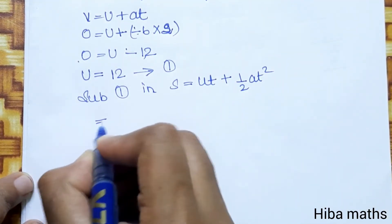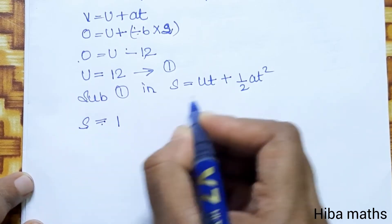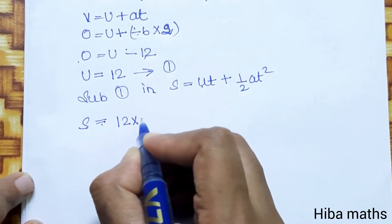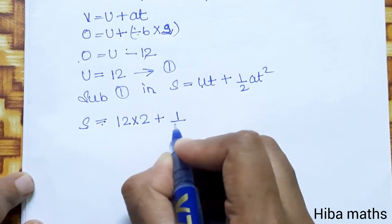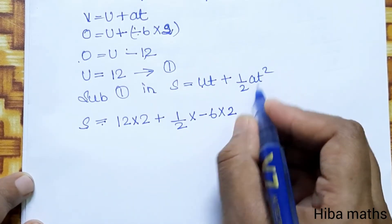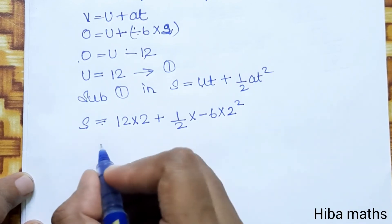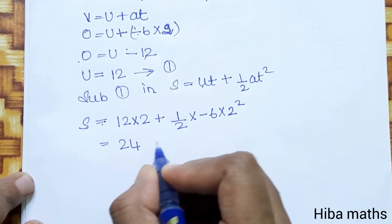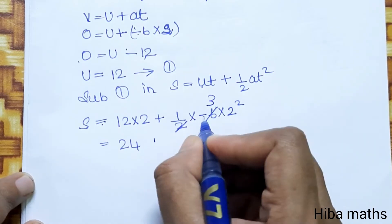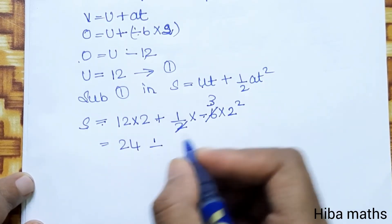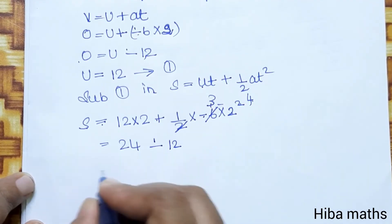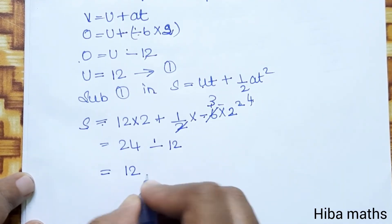Substituting the values: s = 12 × 2 + (1/2) × (minus 6) × 2 squared. So 12 twos are 24, and (1/2) × (minus 6) × 4 = minus 12. Therefore s = 24 minus 12 = 12.